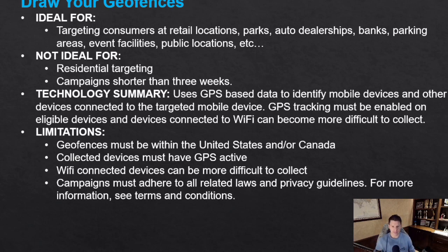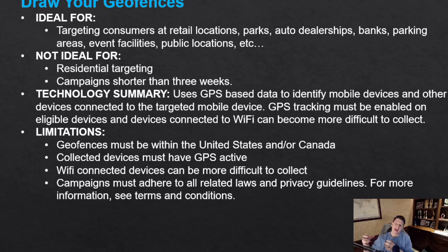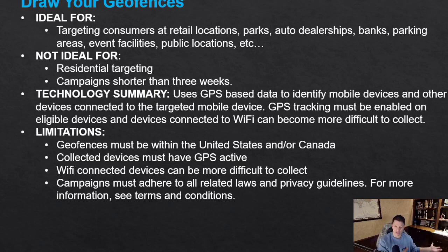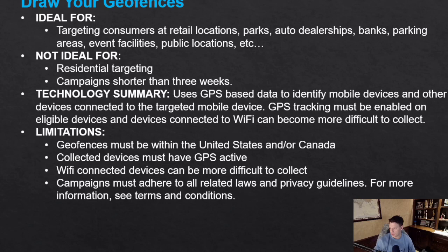Drawn geofence technology uses GPS data and cross-references it with Wi-Fi data when available. It doesn't have as many data points as addressable geofencing because there's less information tied to specific drawn locations versus a residential address. Because of this, drawn geofences might not collect as many devices as addressable geofencing. GPS must be turned on — about 10% of phones don't have it turned on, so we automatically miss those devices.